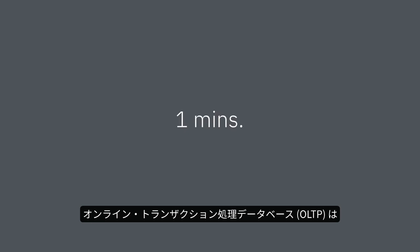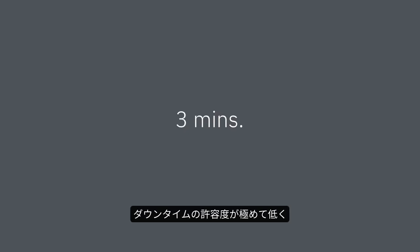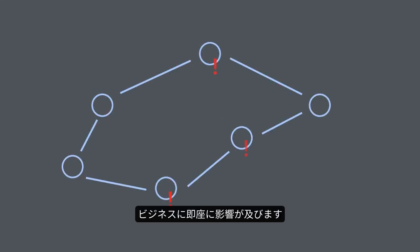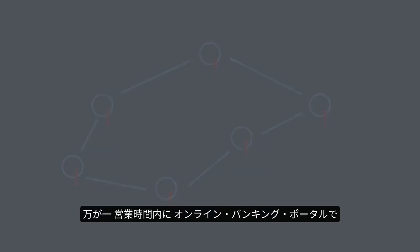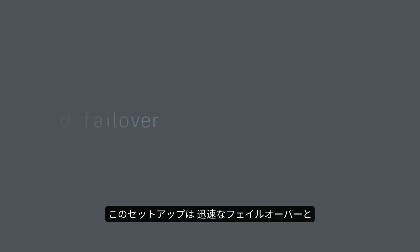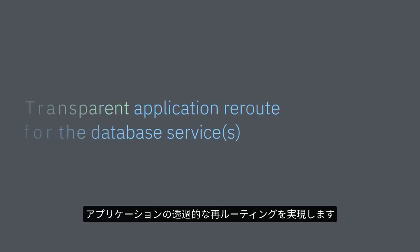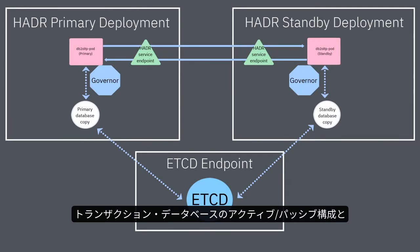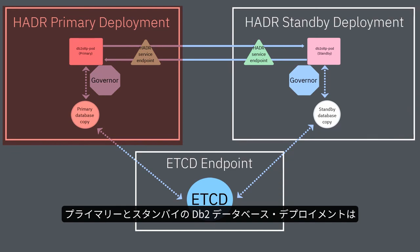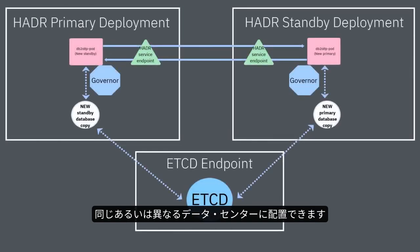Online Transaction Processing databases are highly sensitive to any sort of downtime. A few minutes of outage can result in thousands of connectivity failures, resulting in immediate impact to businesses — imagine downtime of an online banking portal in the middle of the day. Introducing DB2 High Availability Disaster Recovery in a container. This setup allows for rapid failover combined with transparent application reroute for the database services. DB2 HADR provides an active-passive transaction database configuration combined with failover automation logistics. The primary and standby DB2 database deployments can reside in the same or different data centers.